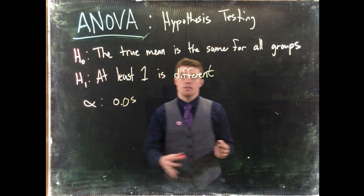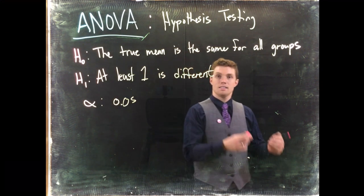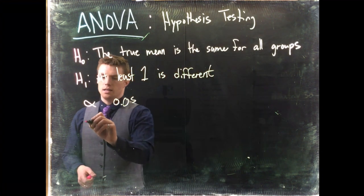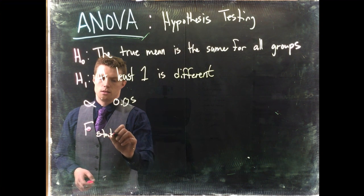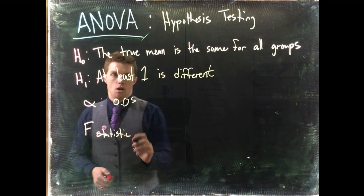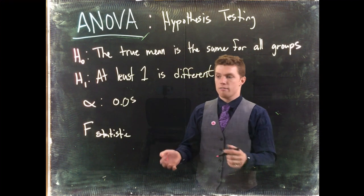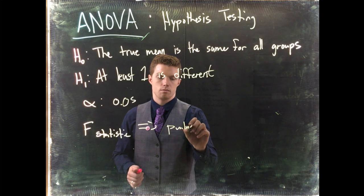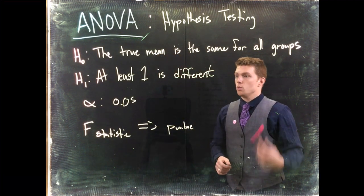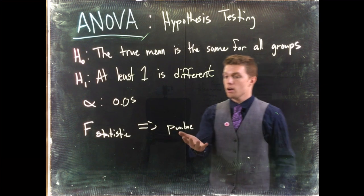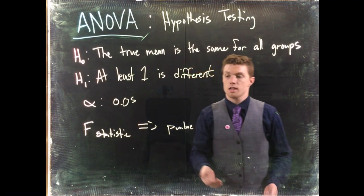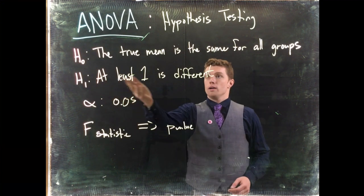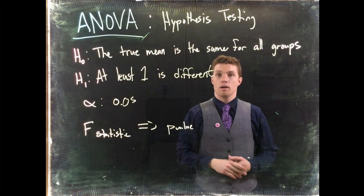And this time, instead of the test statistic being like a T statistic or a Z statistic, which we have been working with so far, now we are going to get an F statistic. Ultimately, though, we're trying to do the same thing. We're trying to get the F statistic so that we can get a p-value. Once we have our p-value, we can then compare our p-value still to the alpha. And the rules are still the same. If the p-value is less than alpha, we can claim that at least one of the true means is different from one of the others.